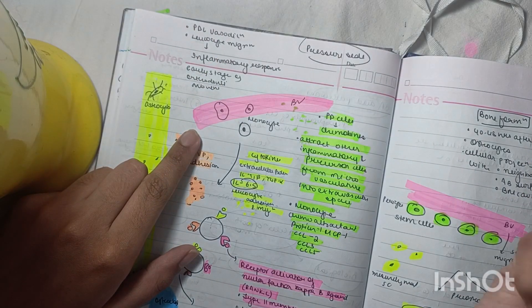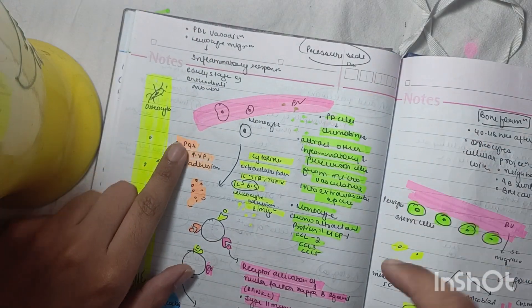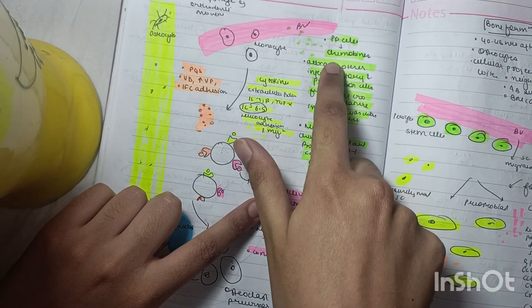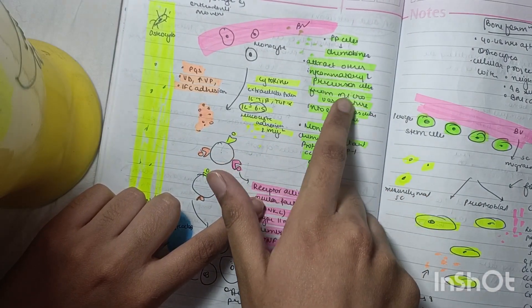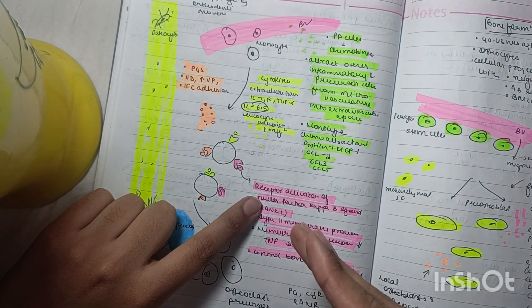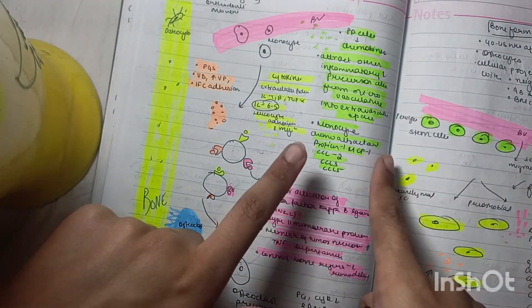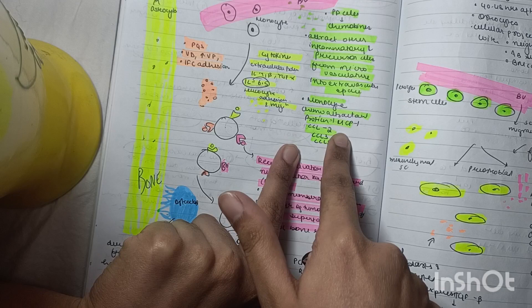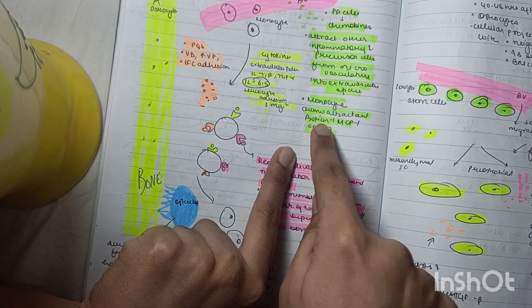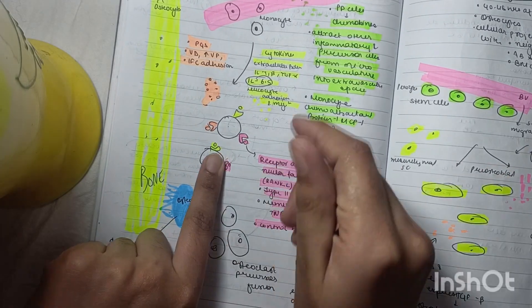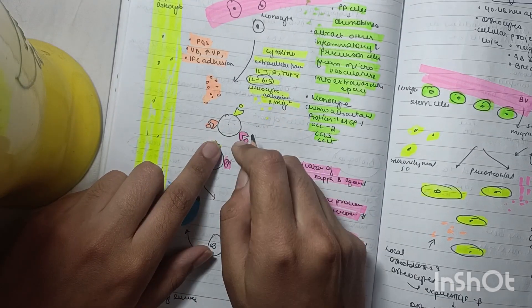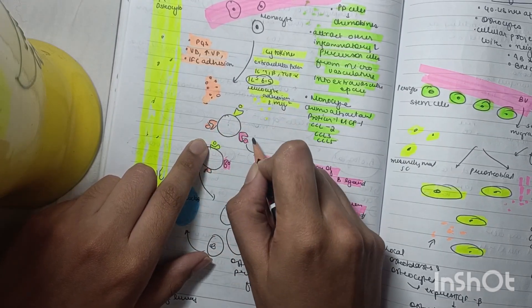The PDL cells release chemokines which attract inflammatory precursor cells from microvasculature into the extravascular space. Remember monocyte chemoattractant protein (MCP), CCL2, CCL3, CCL5. There are three receptors: cytokine receptor, prostaglandin receptor, and RANKL receptor.